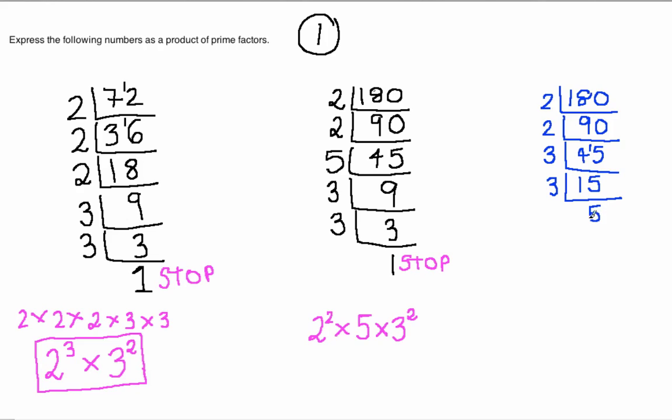And we get the number 5. And finally, the only number that we can think of that is prime that goes into 5 is the number 5. And we get a 1. So again here we can stop. We've reached the end.